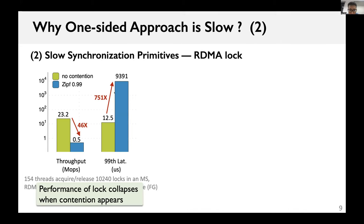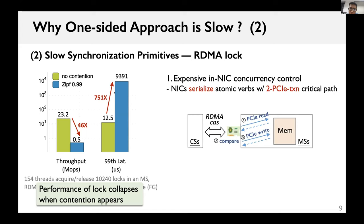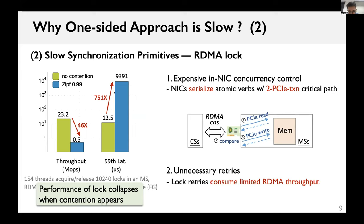We attribute this to three reasons. First, granting correct semantics between conflicting RDMA atomic commands: RDMA NICs adopt an internal locking scheme to serialize conflicting atomic commands, and an atomic command has a long critical path — at the receiver side, an RDMA compare-and-swap triggers one PCI read transaction and one PCI write transaction. Second, when failing to acquire a lock, the client thread retries, consuming the limited throughput of RDMA NICs.